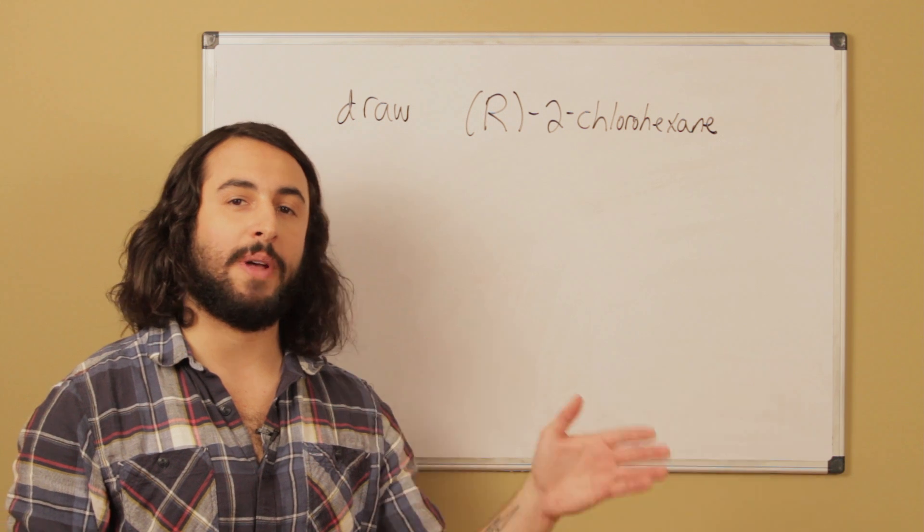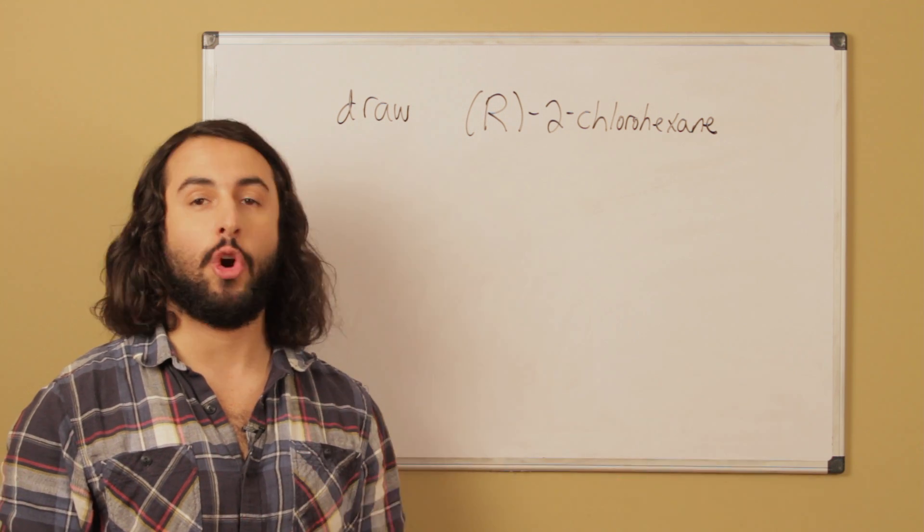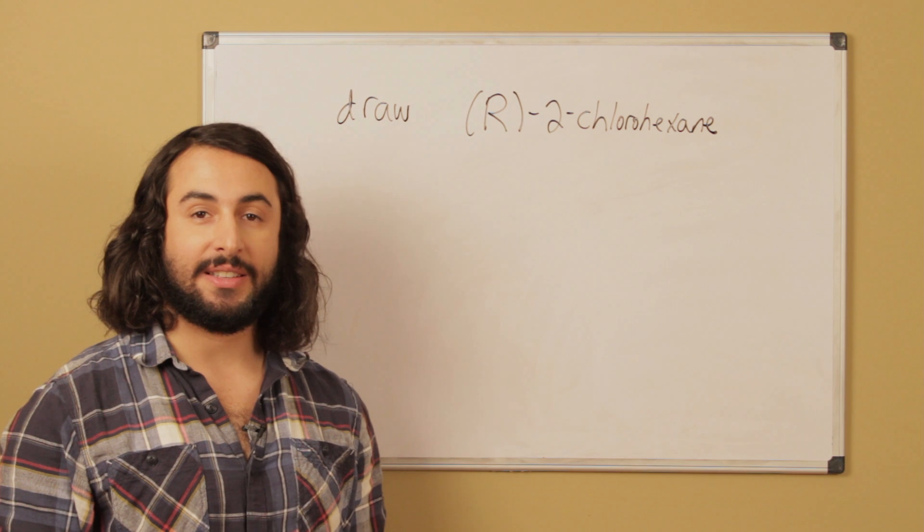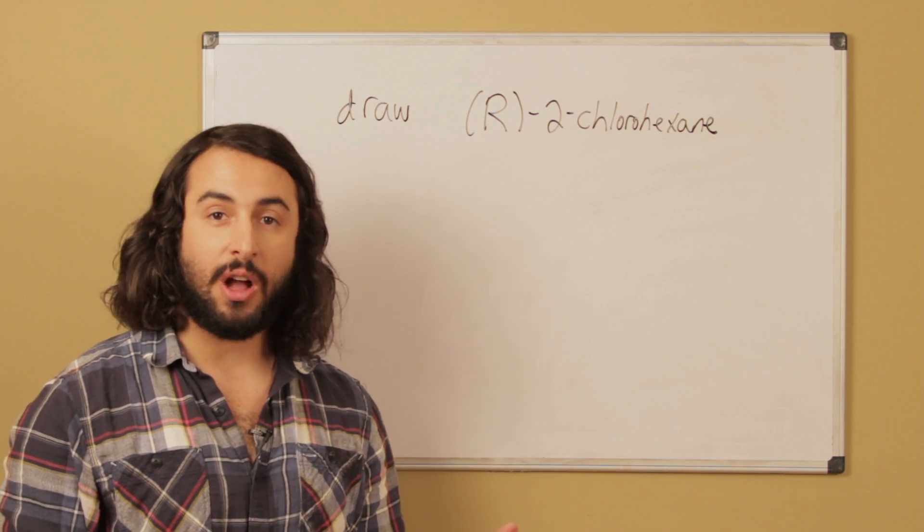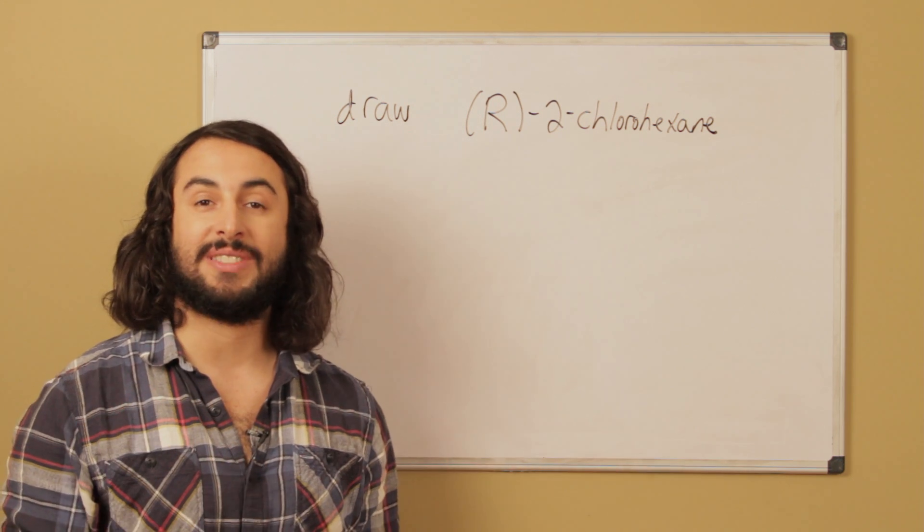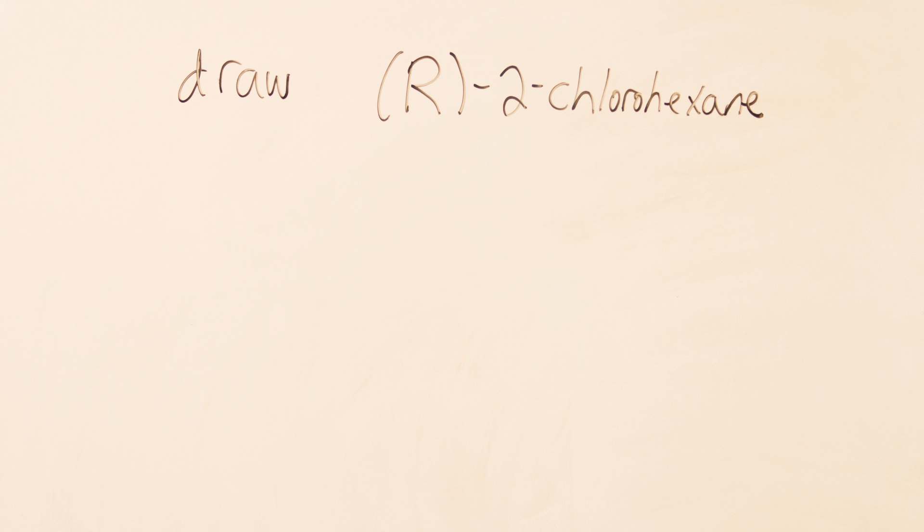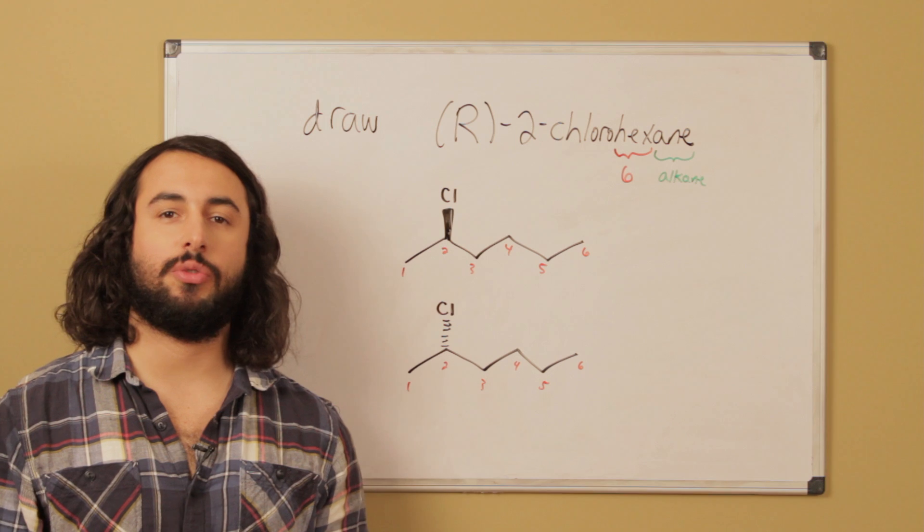So if this seems confusing, you're going to want to go back and review my tutorials on nomenclature as well as the Cahn-Ingold-Prelog convention in terms of being able to assign R and S.